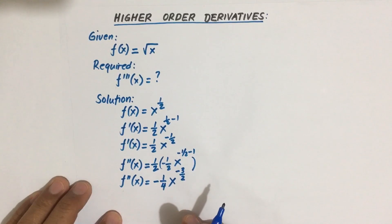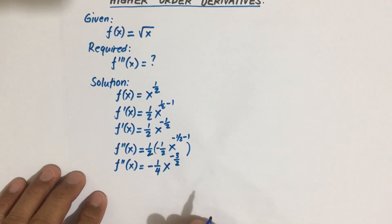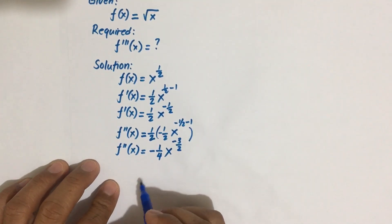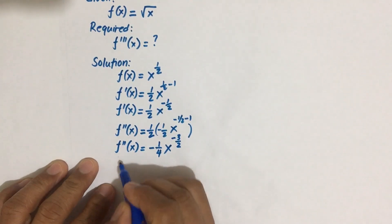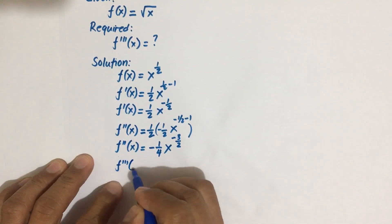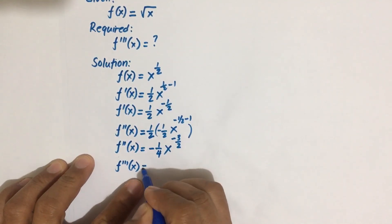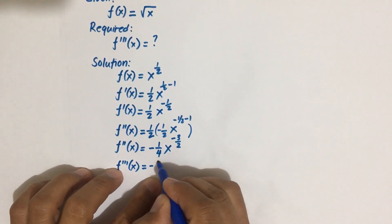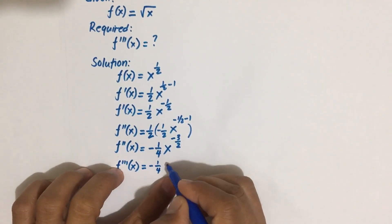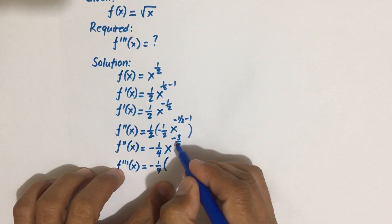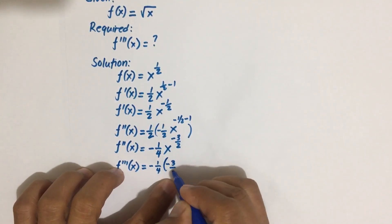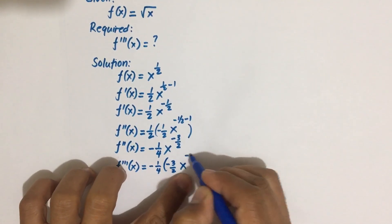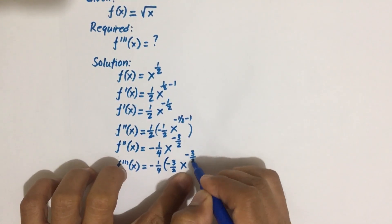Now solving for f triple prime, the third derivative. Again we apply the power rule, bringing the power down: negative three-halves times x to the power negative three-halves minus one.